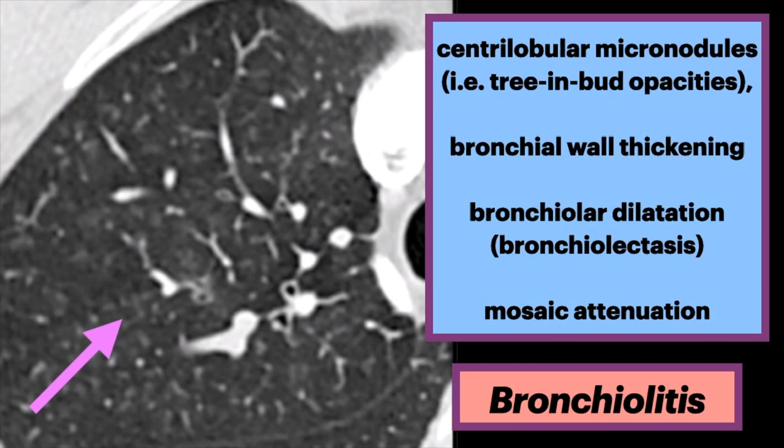The presence of bronchiolitis is best assessed with CT. CT features include centrolobular micronodules, often seen as tree-and-bud opacities, bronchial wall thickening, bronchiolar dilatation often referred to as bronchiolectasis, and mosaic attenuation and/or air trapping if expiratory imaging is included.